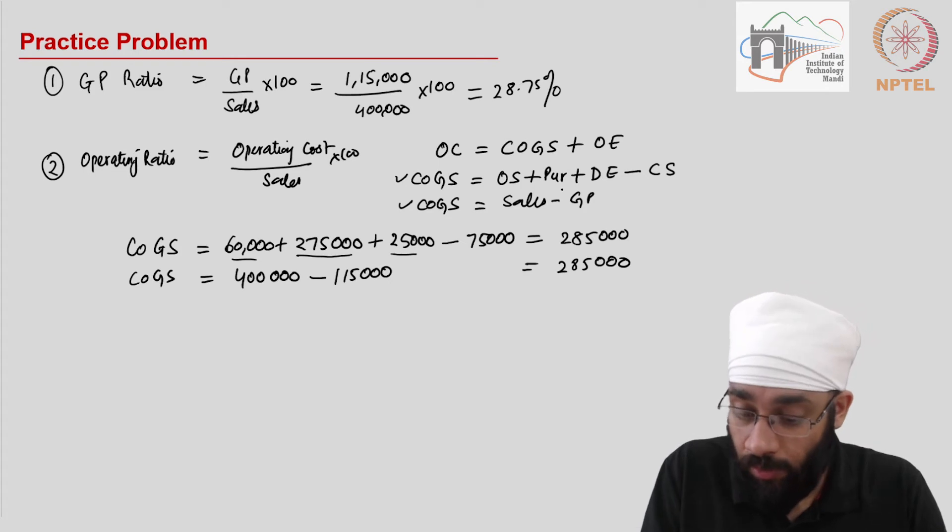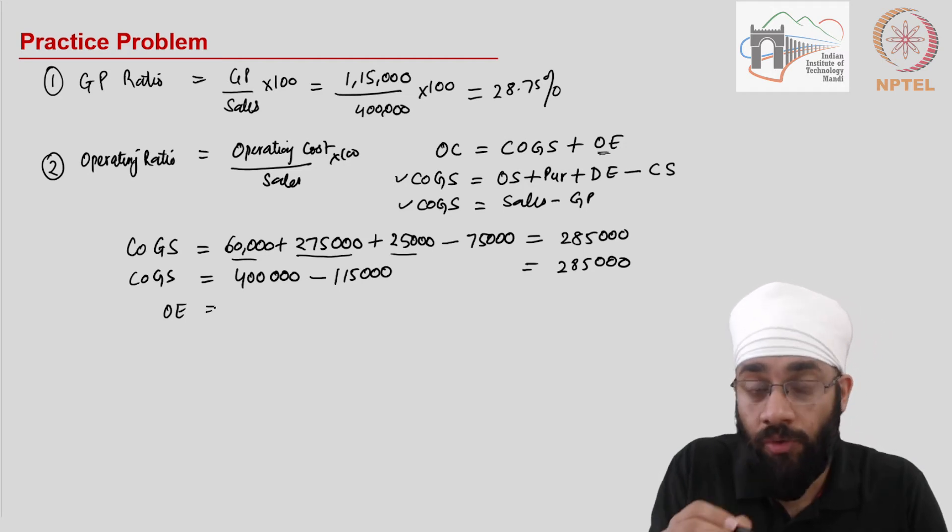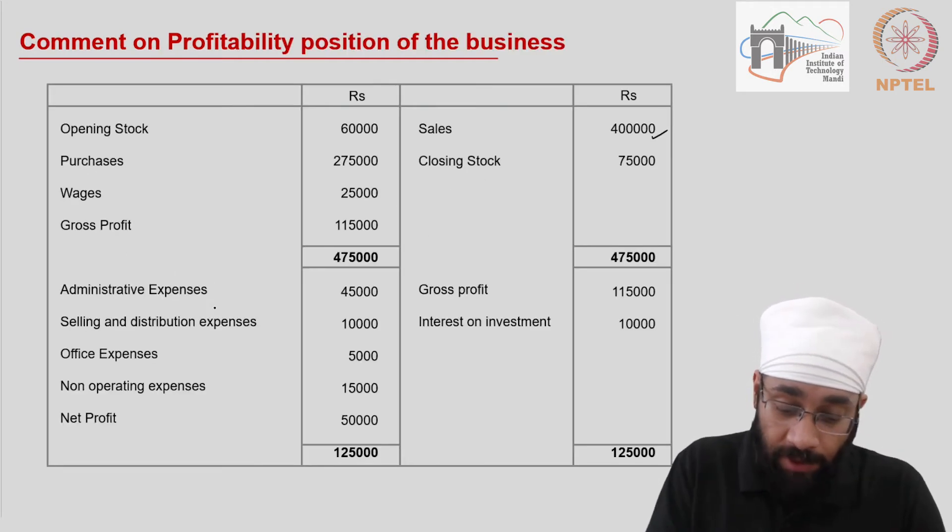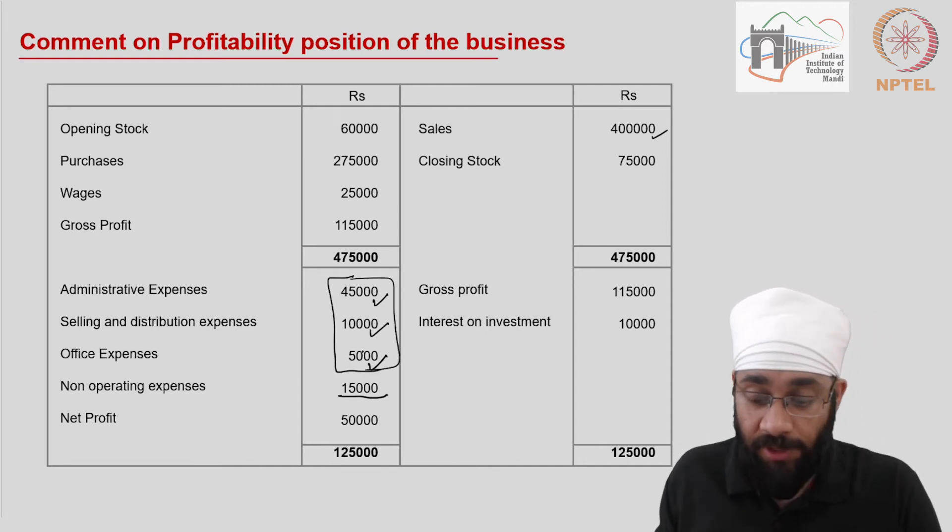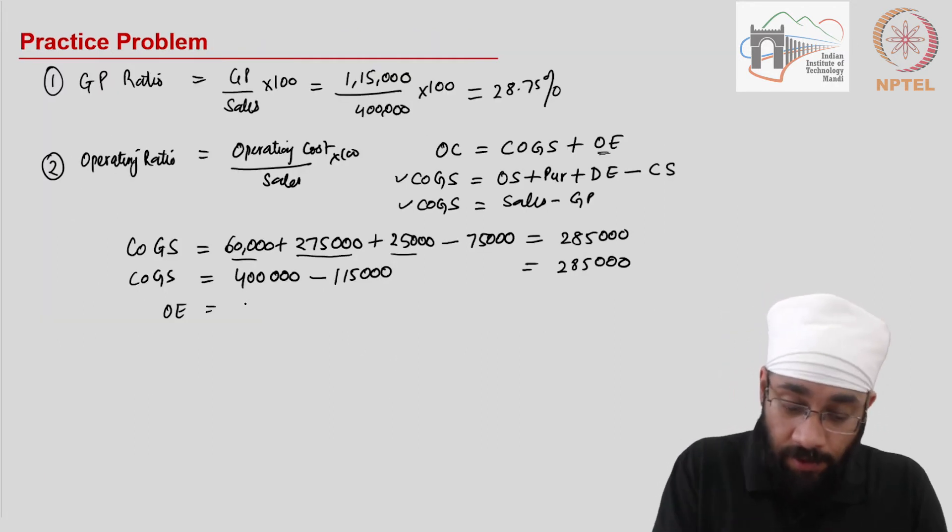Now you need to look at the operating expenses. What are the operating expenses during the year in addition to cost of goods sold? The operating expenses will include administrative expenses, selling and distribution, office expenses and then you have non-operating. So we are only considering this much. So this comes out to be 60,000. Operating expenses are 60,000.